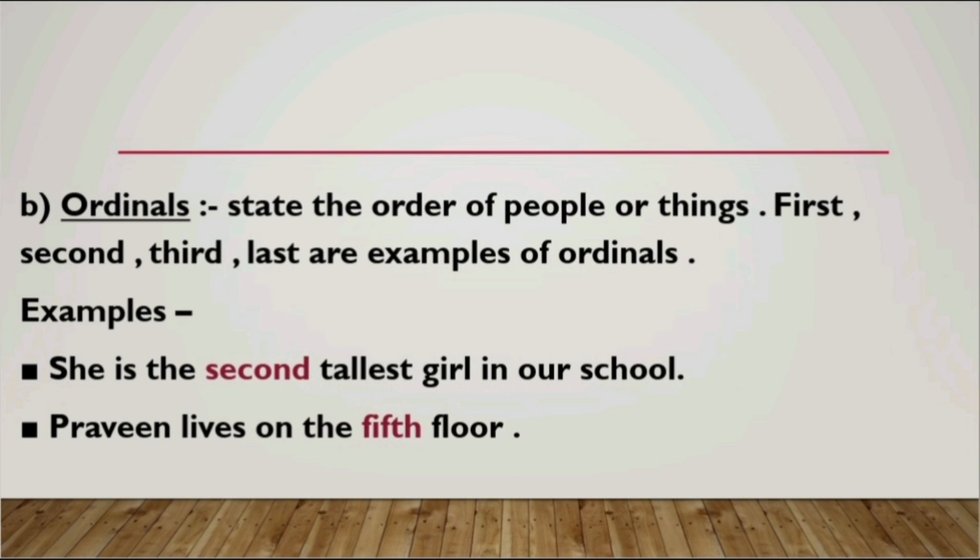Ordinals state the order of people or things — basically they talk about the arrangement or position of people or things. For example: first, second, third, fourth, last, etc. They talk about the arrangement or position of a given noun. Have a look at the example: 'She is the second tallest girl in our school.' The word 'second' is your ordinal adjective, describing the girl.